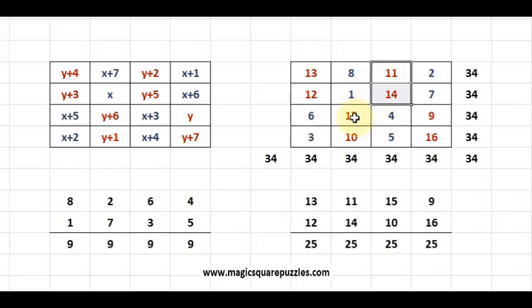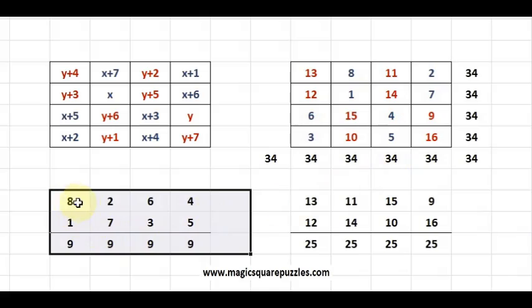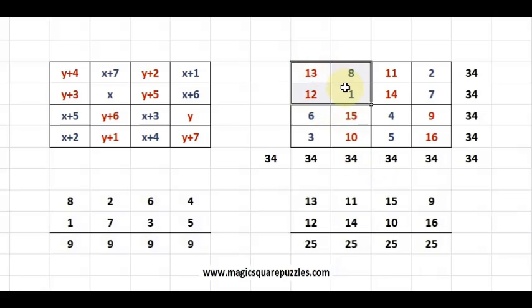See all the y pair, it gives you 25. What does the x pair add up to? 8 plus 1 is 9, 2 plus 7 is 9, 6 plus 3 is 9, 4 plus 5 is 9. That we have put it here. This is the x pair and this is the y pair. So you add them, you get 34.